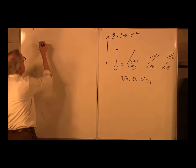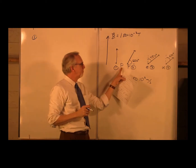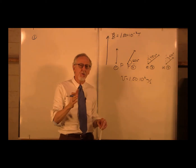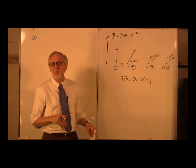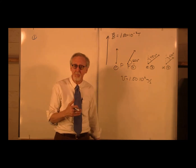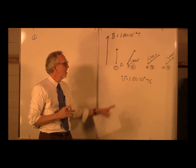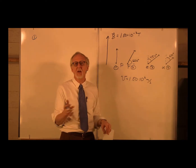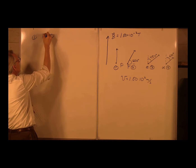First, particle number 1 — that is a proton. What is the magnitude of the force? Remember, magnitude is F equals QVB sine theta. What's the force going to be on this one? It's going to be zero. Why? Because what is theta for this first particle? Theta is zero. Sine of zero is zero. So the force for the first one is zero.